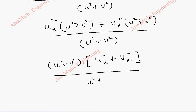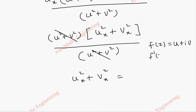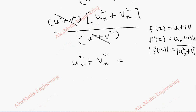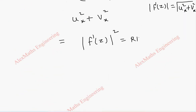We can cancel (u squared plus v squared), so the remaining is only ux squared plus vx squared. Now, f dash of z equals ux plus i·vx, so the modulus of f dash of z is root of (ux squared plus vx squared). Without the square root, this is the modulus of f dash of z, whole squared. So we took the LHS and we got the RHS: mod f dash of z whole squared, which equals RHS. Hence proved.